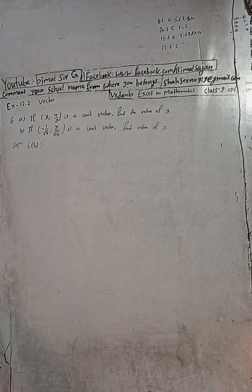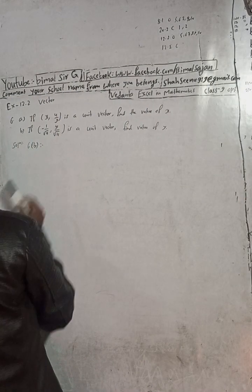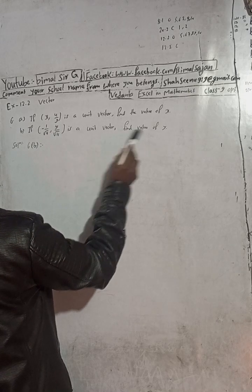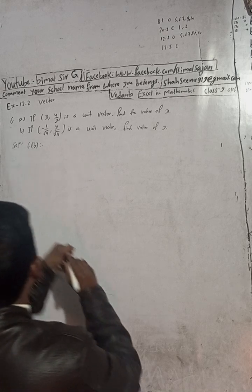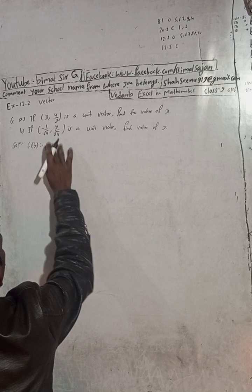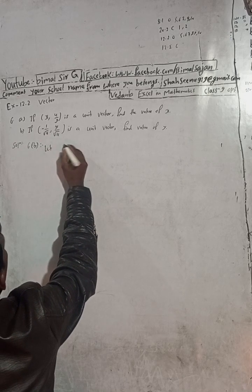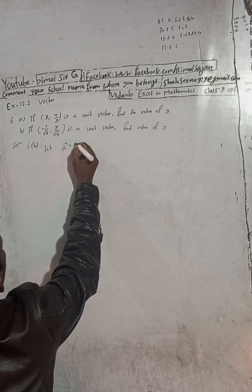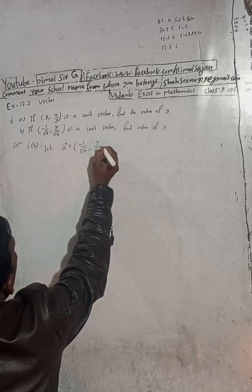This is question number 6B. The question is: if (-1/√11, y/√11) is a unit vector, find the value of y. So here, let vector a be equal to (-1/√11, y/√11).